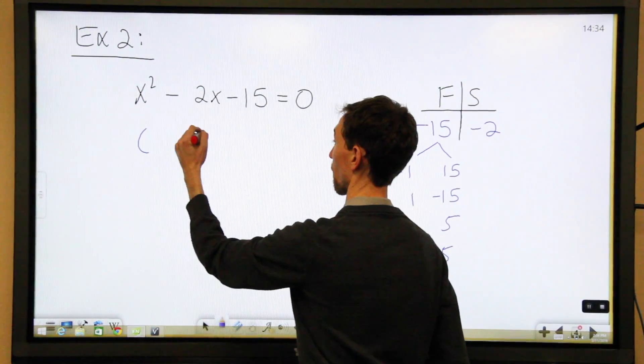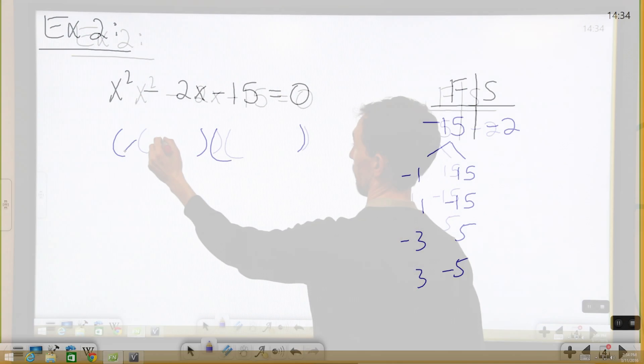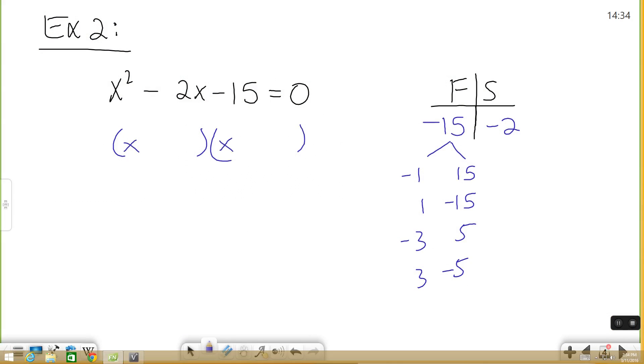So let's set up our factors. We have x and x, and then we have again positive 3, negative 5. Positive 3, negative 5. Just like last time, set each of our factors equal to zero and solve.